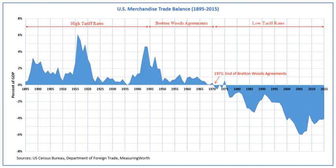Instead, they set up a system of fixed exchange rates managed by a series of newly created international institutions using the U.S. dollar — which was a gold standard currency for central banks — as a reserve currency. In the 19th and early 20th centuries gold played a key role in international monetary transactions. The gold standard was used to back currencies; the international value of currency was determined by its fixed relationship to gold, and gold was used to settle international accounts. The gold standard maintained fixed exchange rates that were seen as desirable because they reduced the risk when trading with other countries.